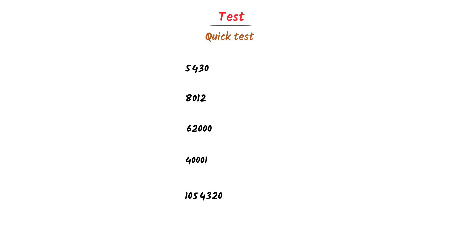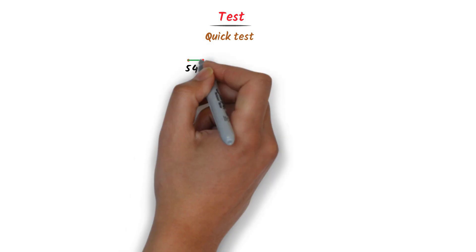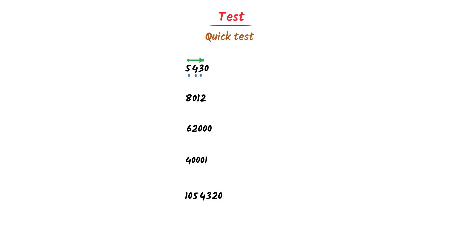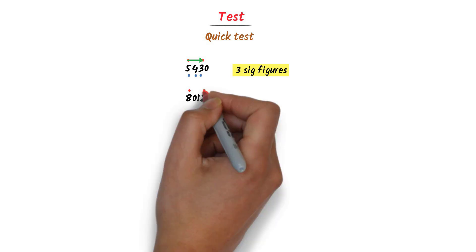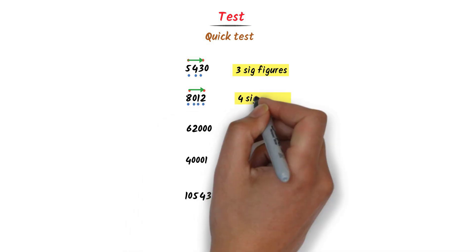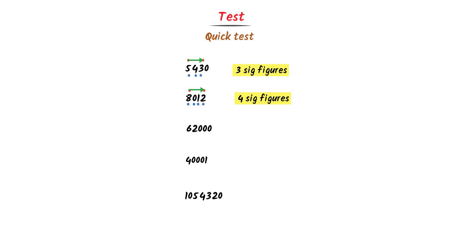In case of the first number, the first non-zero digit is 5 and the last non-zero digit is 3. I go from 5 to 3: 1, 2, 3. So there are 3 significant figures present in this number. In case of the second number, the first non-zero digit is 8 and the last non-zero digit is 2. Hence there are 4 significant figures present in this number.